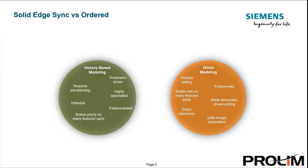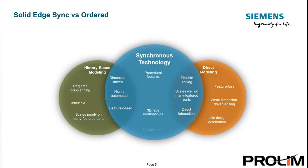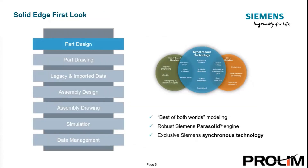So how about we take the best of both of these worlds, but leave out the downsides to both? This is why Siemens created synchronous technology, with unique items such as 3D-driving dimensions, face relationships, procedural features, and design intent to really synchronize these worlds together. To summarize, we get the best of both worlds modeling — the best of history-based and the best of direct modeling methods — and that's synchronous technology.